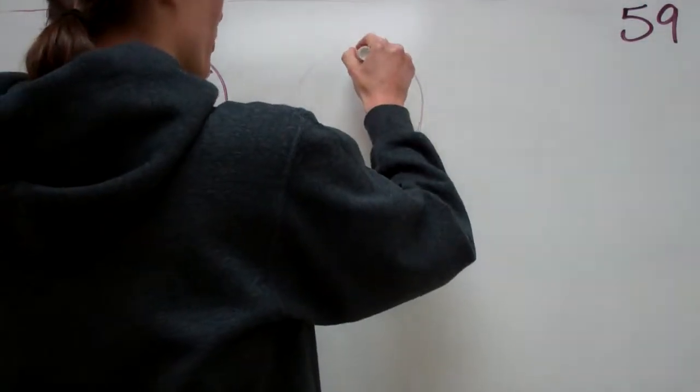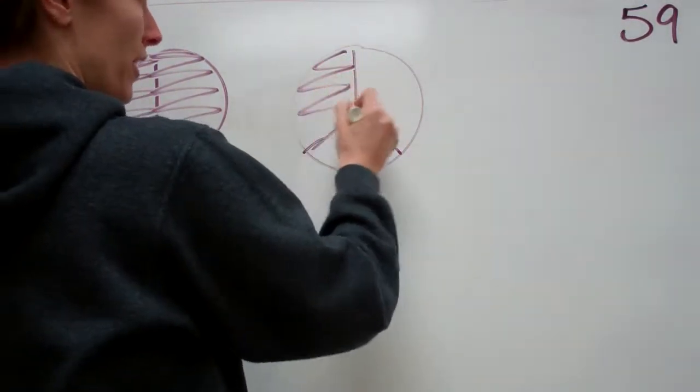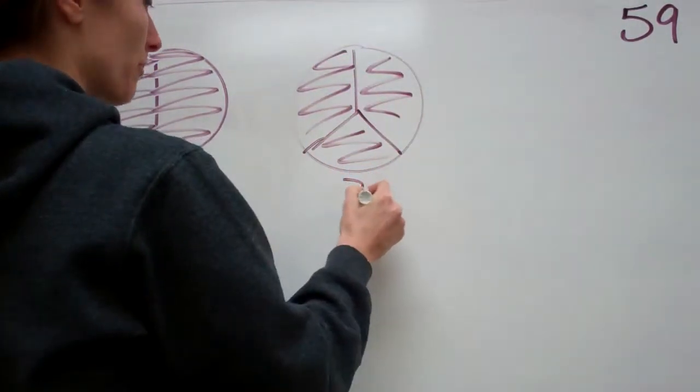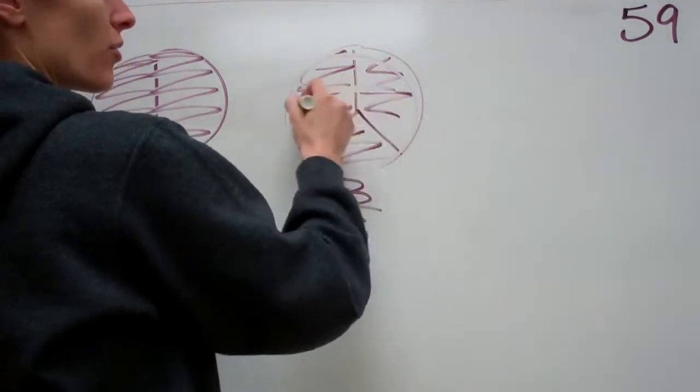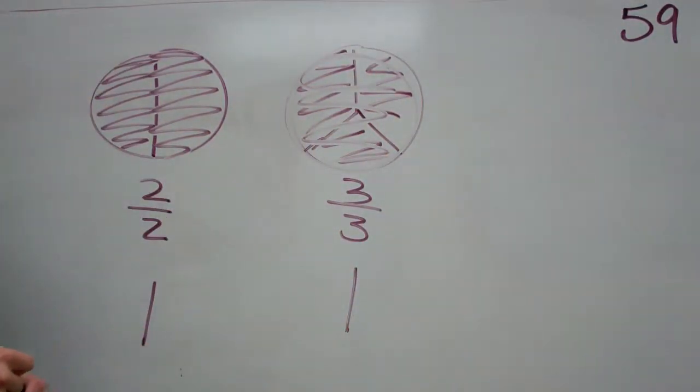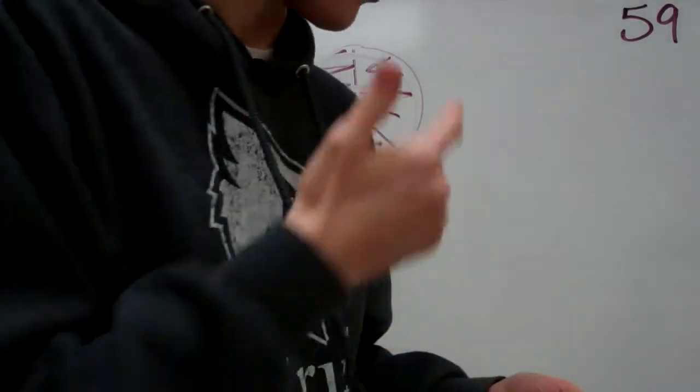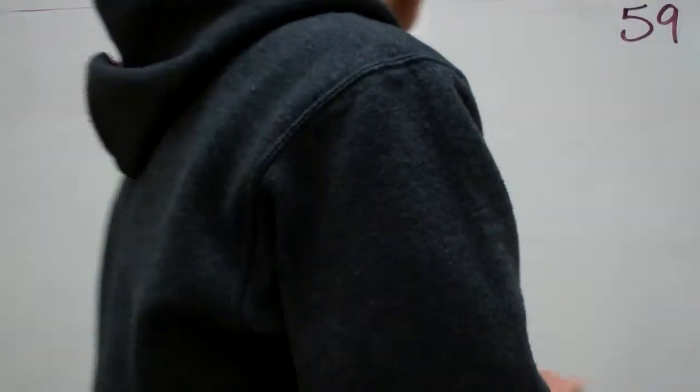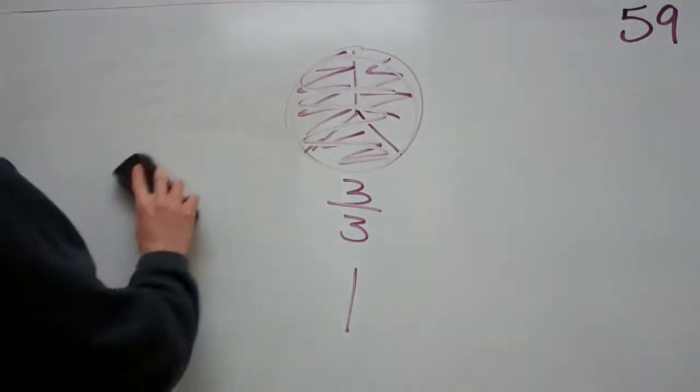So even if I had three right here, and all three of them were filled in, it would be three out of three, which makes the whole thing filled in, one whole. So no matter what we do or how many pieces we cut it in, if they're all filled in, then it makes it a whole.